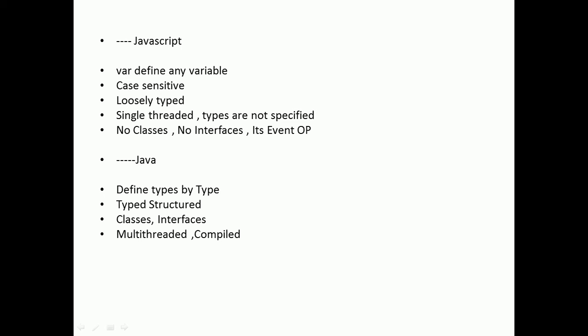For example, if you need to define an object in Java, you type object equals new object. In JavaScript, you just define var object, then you do whatever you want. So JavaScript is loosely typed - you don't need to define the type.